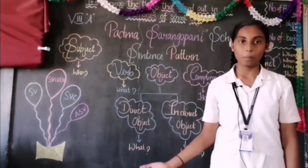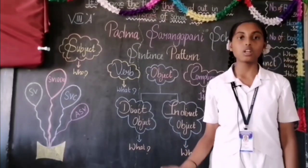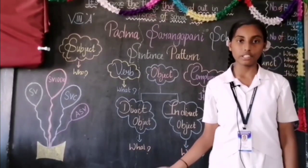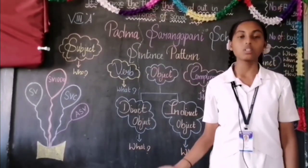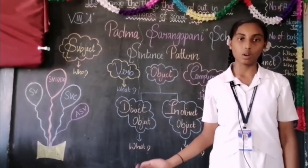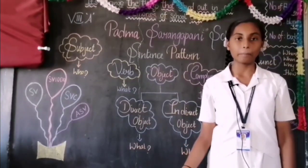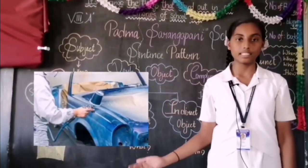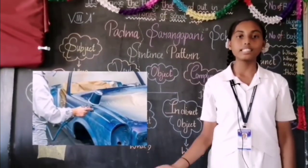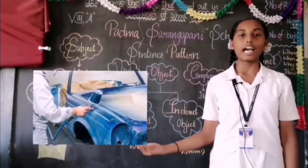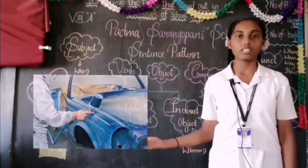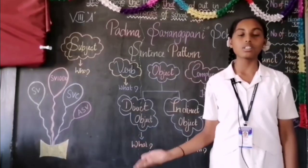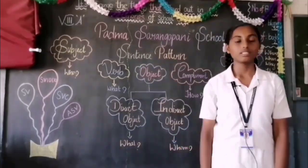Object complement: object complement answers the question HOW asked on the object. Example: he painted a car blue. How did he paint the car? Here, 'blue' answers the question HOW asked on the object.